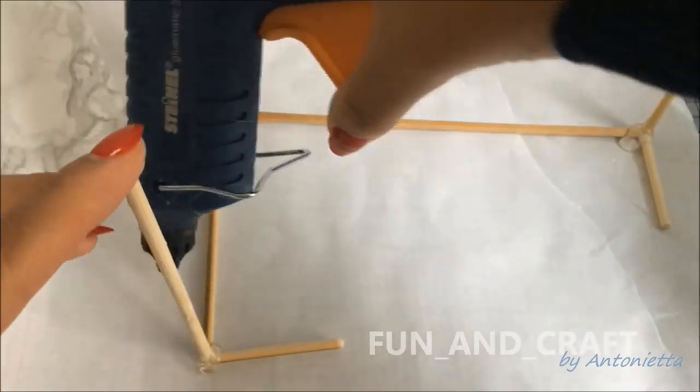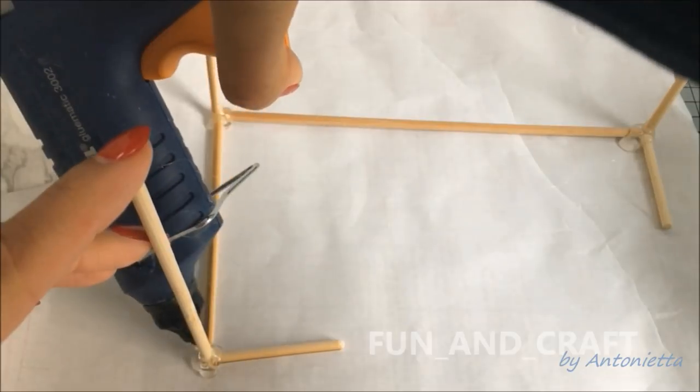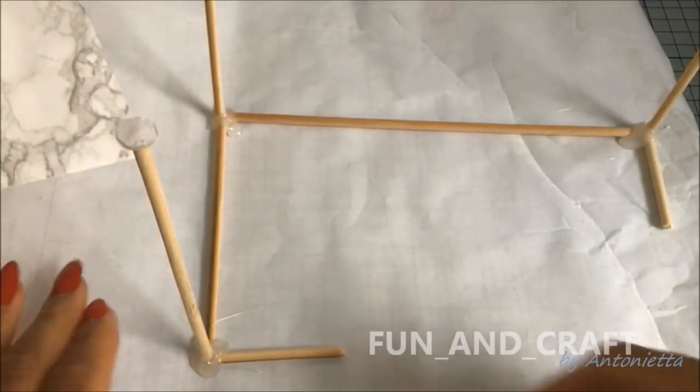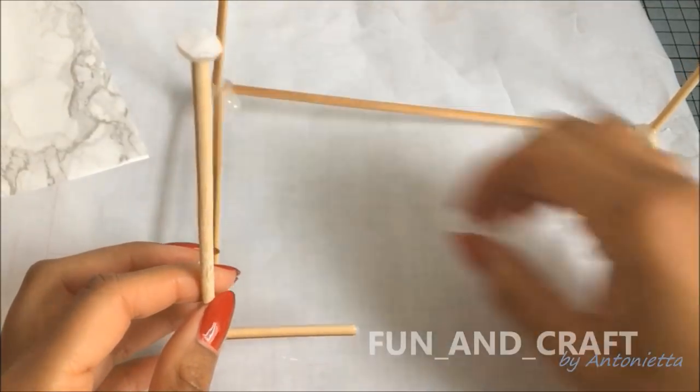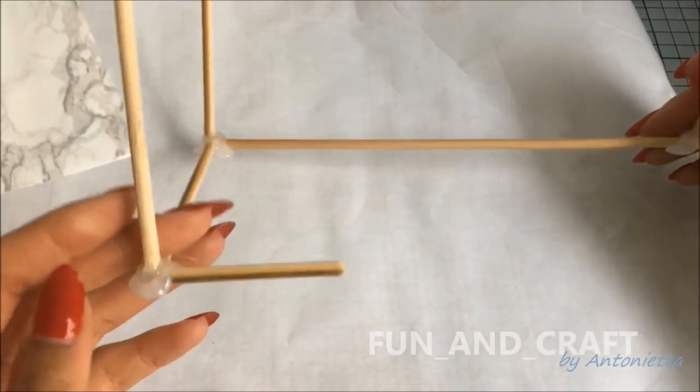For the next step I'm going to place the wooden sticks on paper that hot glue doesn't stick to, which makes everything a lot easier. Apply a generous amount of hot glue to the corners of the framework, and once it is completely dry you can easily remove it and tidy up the corners with scissors and a cutter.